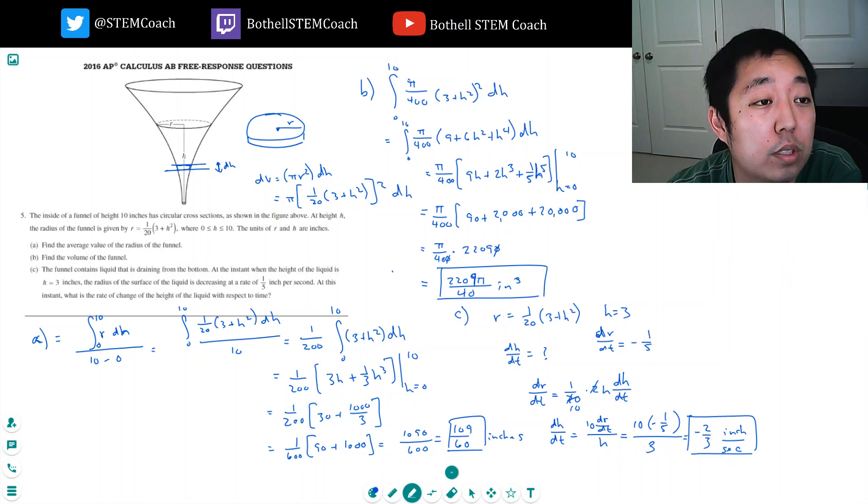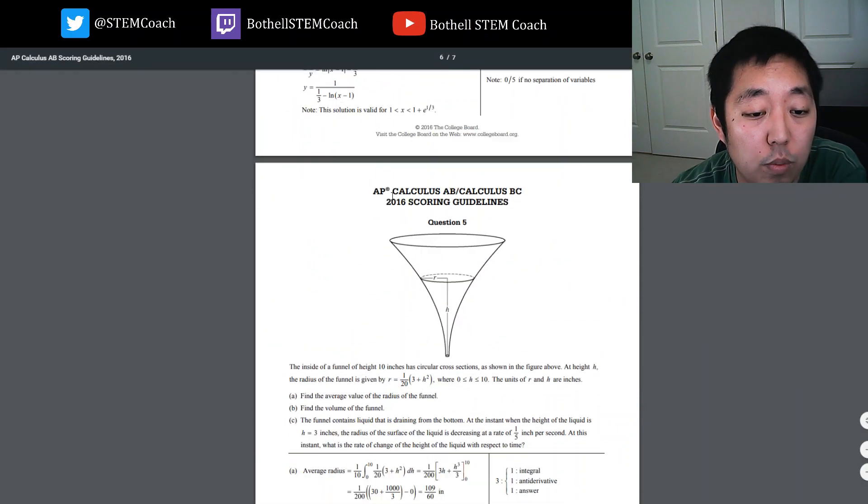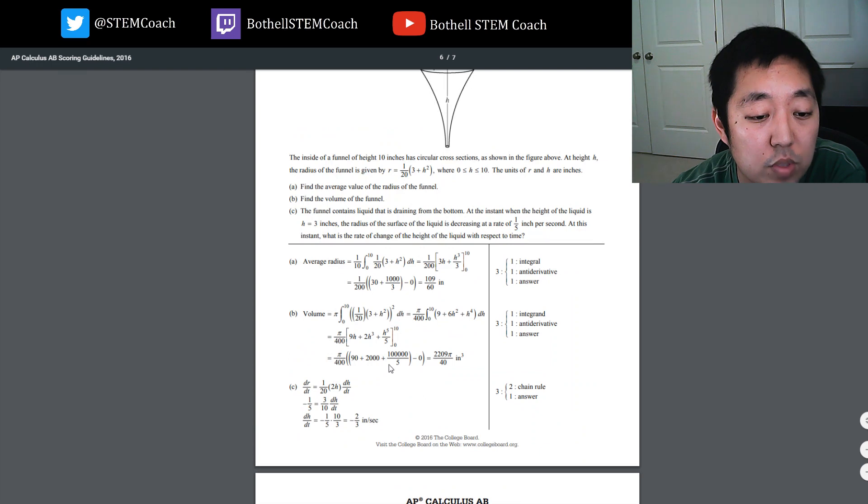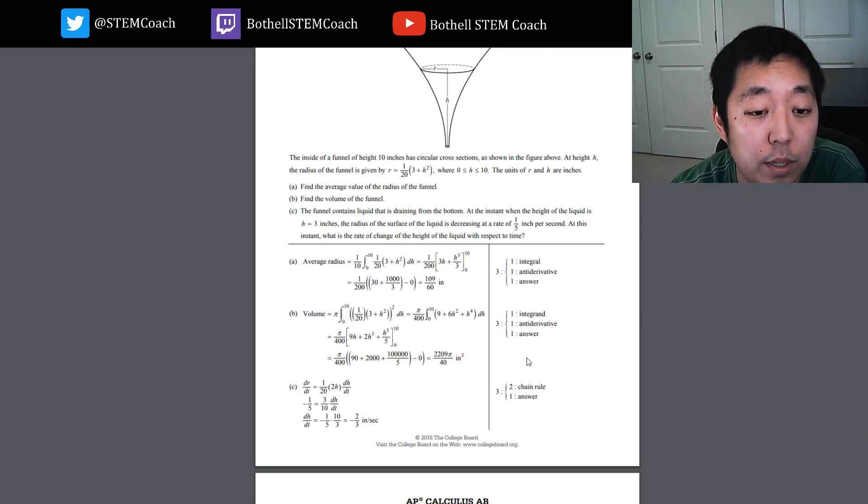So let's look at the scoring guideline for this one. 109 over 60, 2209 pi over 40, and negative 2/3. So nailed that really well. Which is fortunate. I was able to do the math, but the algebra and the math was quite a bit more tedious than I was expecting.